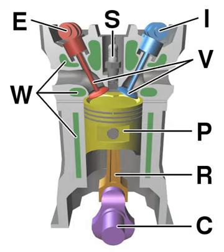Common cylinder configurations include the straight or inline configuration, the more compact V configuration, and the wider but smoother flat or boxer configuration. Aircraft engines can also adopt a radial configuration, which allows more effective cooling. More unusual configurations such as the H, U, X, and W have also been used.